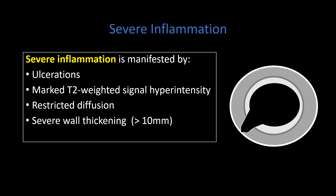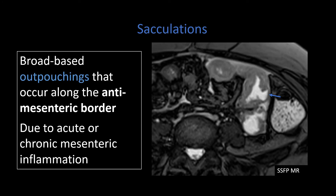Severe inflammation features include ulcerations, marked T2 weighted signal hyperintensity, diffusion restriction, and severe bowel wall thickening. Sacculations may be related to acute or chronic inflammation — similar to ulcerations, they tend to occur along the anti-mesenteric border and are another manifestation of severe or progressive Crohn's disease, potentially an early manifestation of penetrating disease, although that is not well understood.